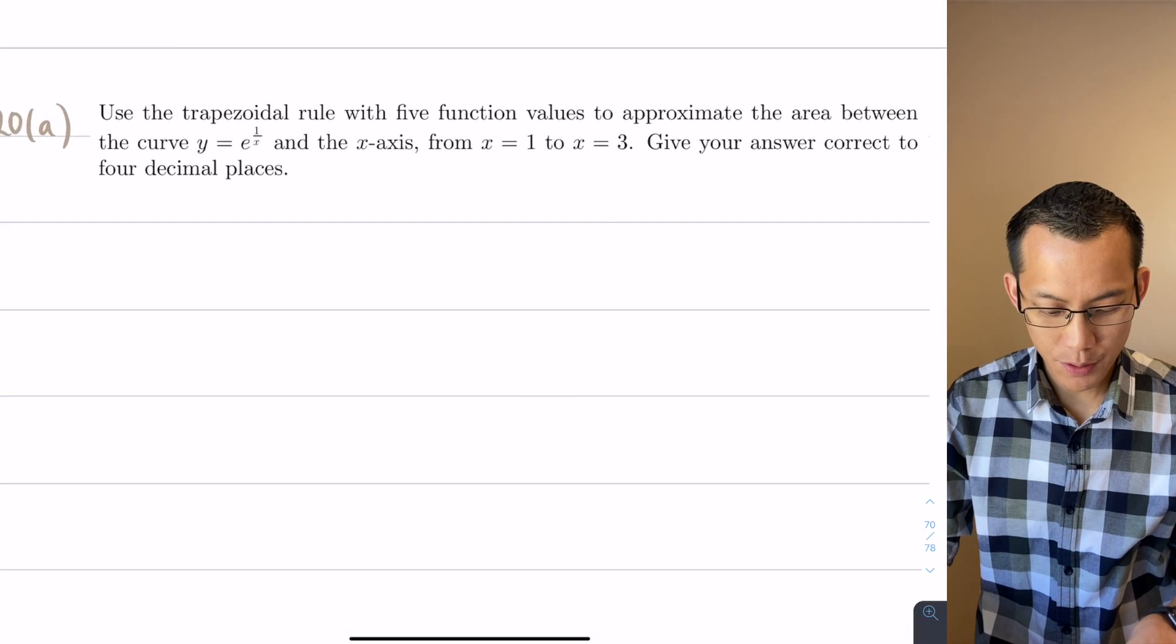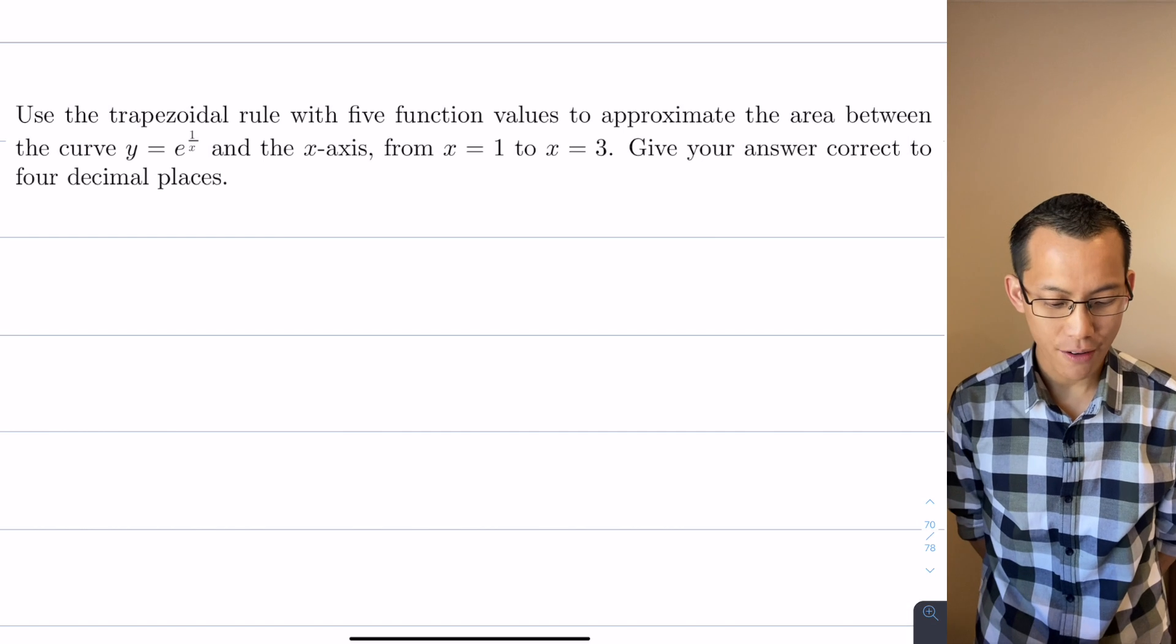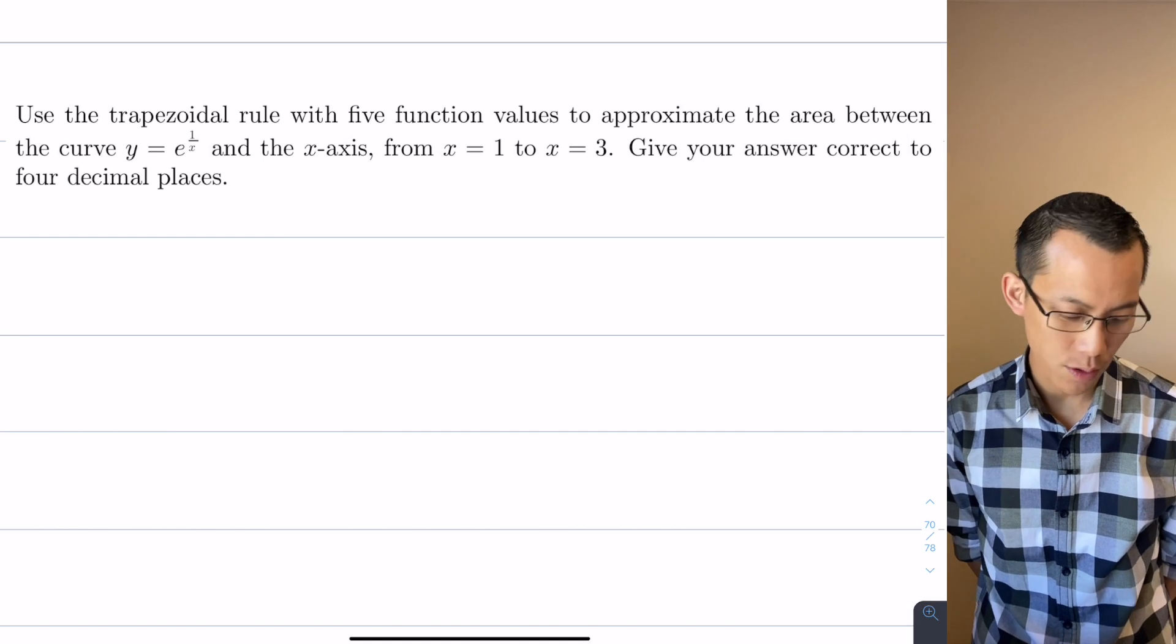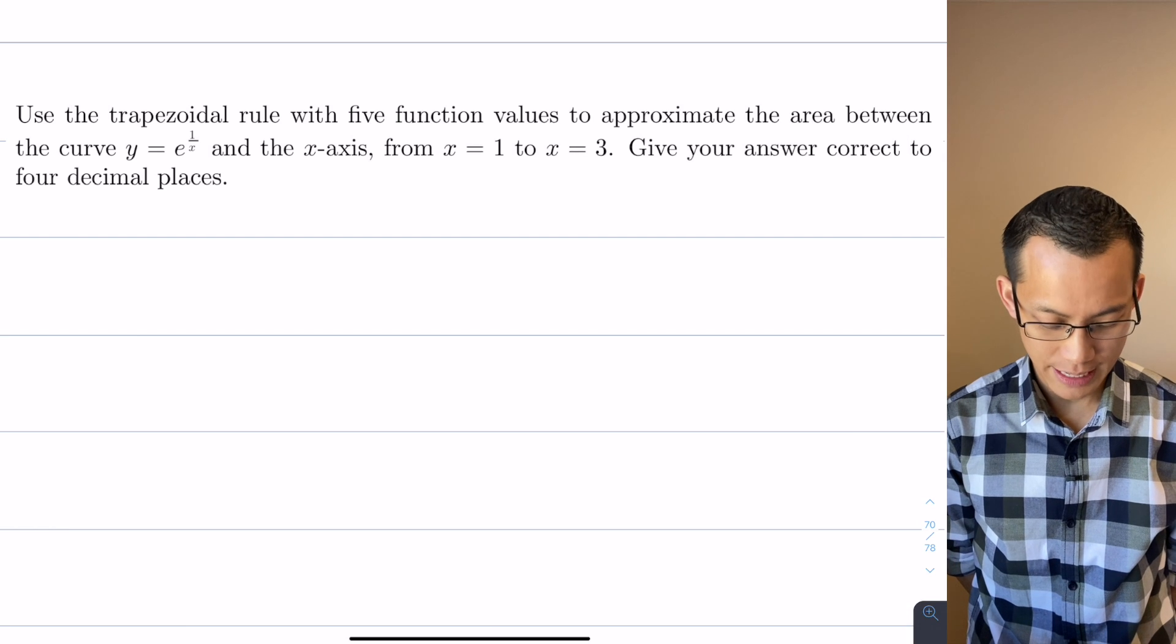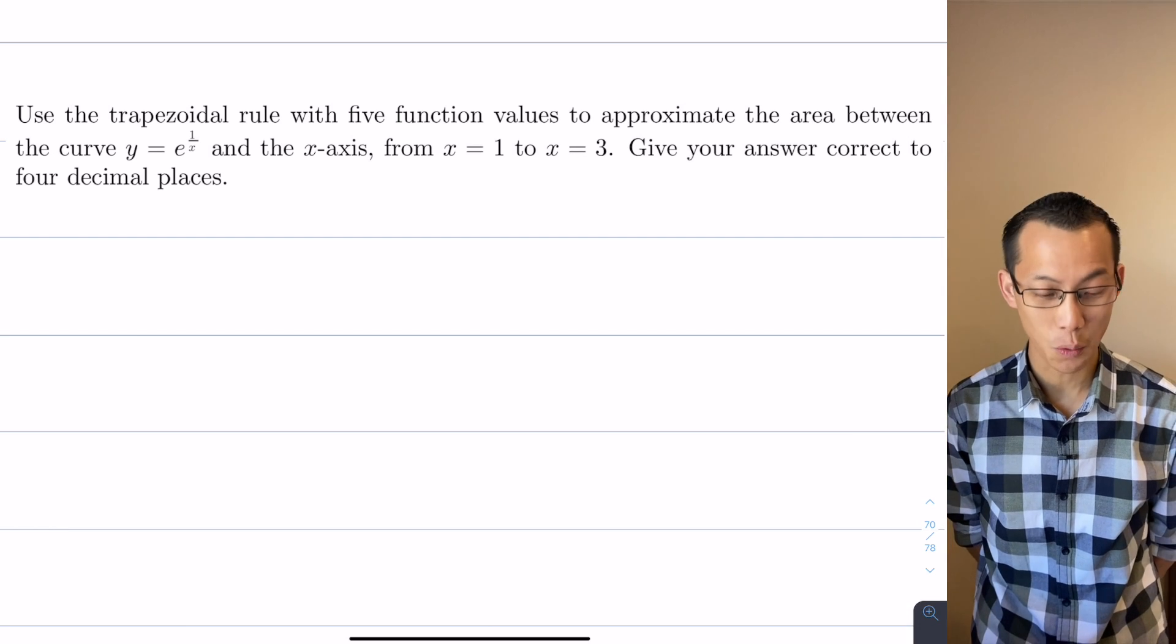The question says use the trapezoidal rule with five function values to approximate the area between the curve and the x-axis from x equals 1 to x equals 3, give your answer correct to four decimal places. Alright, there's a lot to take in here so let's just take it one step at a time.